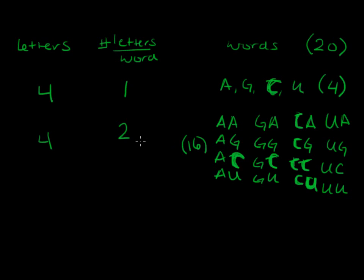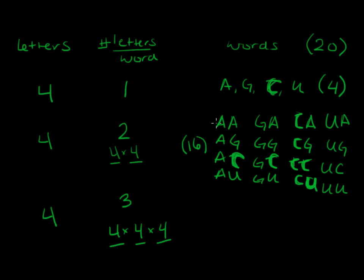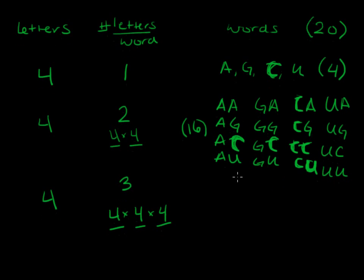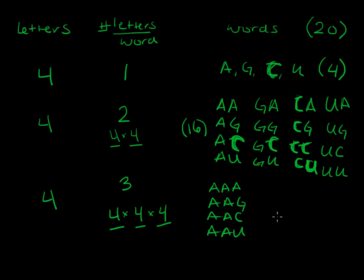With two letters per word you just multiply: four times four equals 16. If we have four letters and three letters per word, that would be four times four times four. The first letter could be any of four, the second any of four, the third any of four. For example: AAA, AAG, AAC, AAU — and so on. Four times four times four equals 64.